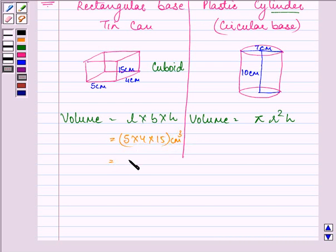Whereas here we have pi as 22 by 7, r will be half of 7, that means 7 by 2, the whole squared into h is 10. So the answer comes out to be 385 centimeter cube.